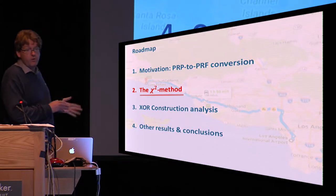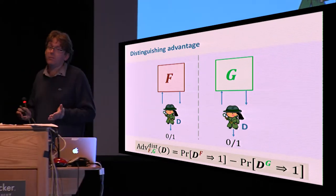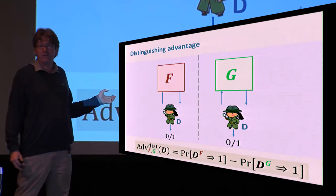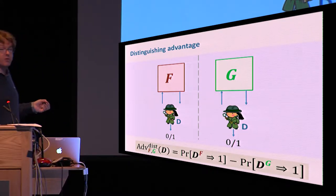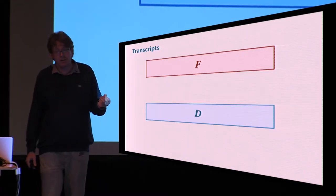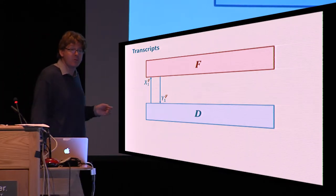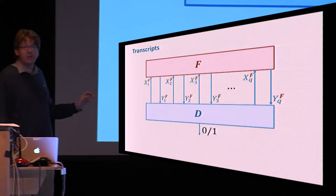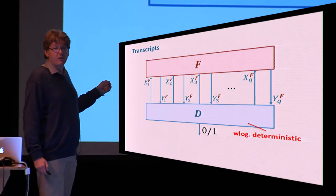I want to give you an overview now how the chi-square method works. We have to look at the general problem of a distinguisher that attempts to tell apart two interactive objects or systems, f and g, by making queries to them, and we want to upper bound its distinguishing advantage in doing so. It is convenient to look more closely at how an interaction between the distinguisher and the system looks like. The distinguisher will proceed by making queries and receiving corresponding answers from the system f and make a certain bounded number of them, say q, before outputting its decision bit.